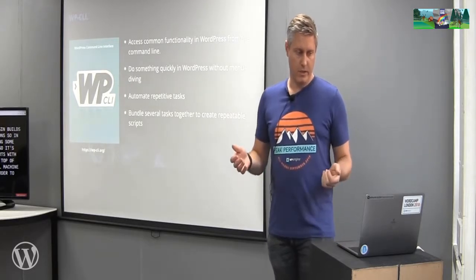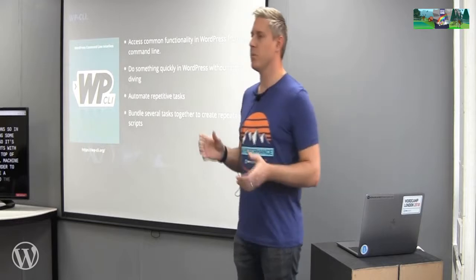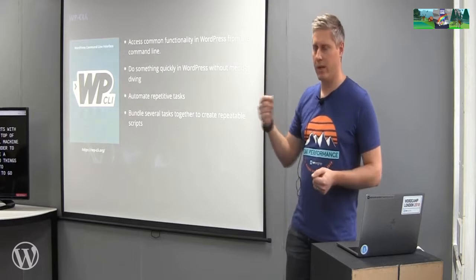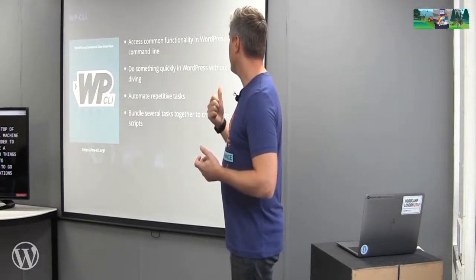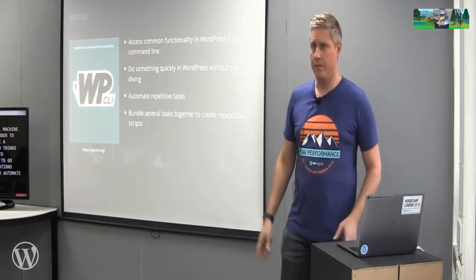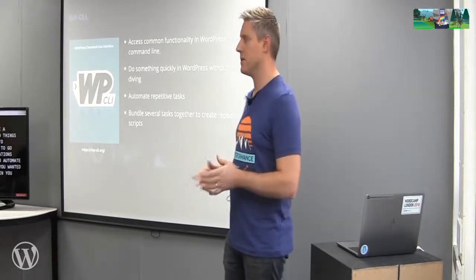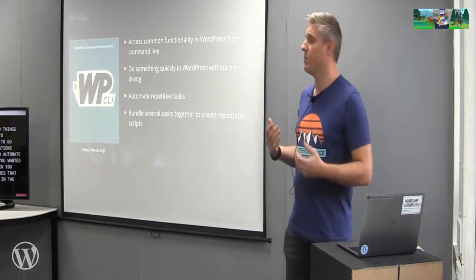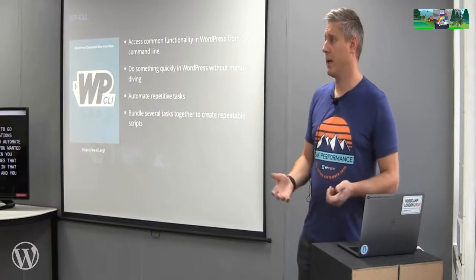WP CLI is a command line tool that allows you to do things in WordPress that you'd otherwise have to click around for — going to the dashboard and doing operations with a mouse. It also allows you to automate repetitive things. If you want to do something over and over again, you just need a script that does that. You can loop through a script, bundle commands together, save them, and run them at any time.